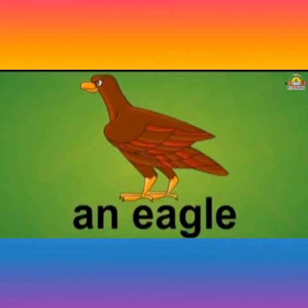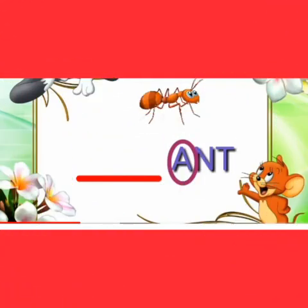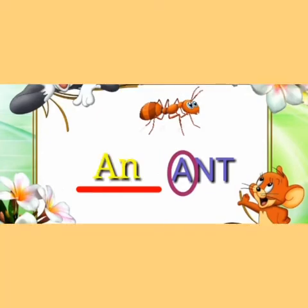Kids, what is this? Yes, this is Eagle. Eagle starts with the vowel E. So what should we use? Yes, AN. AN eagle. Kids, what is this? ANT. What is the starting letter of ANT? Yes, A. A is a vowel. So before a vowel, what should we write? Yes, AN. AN ant.